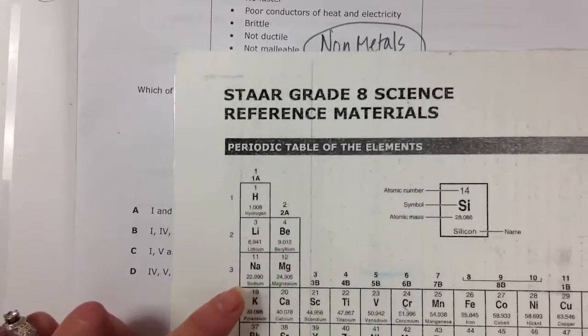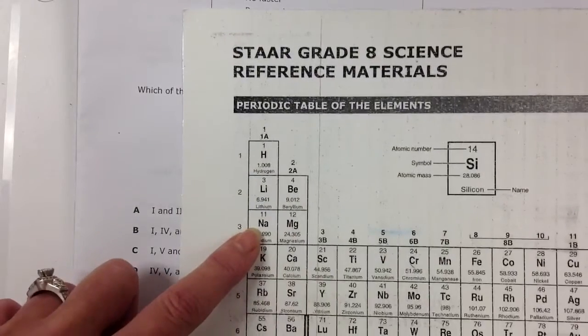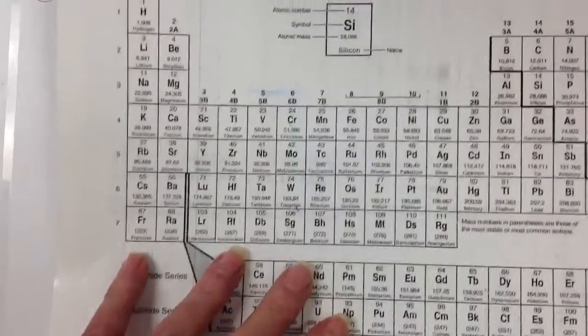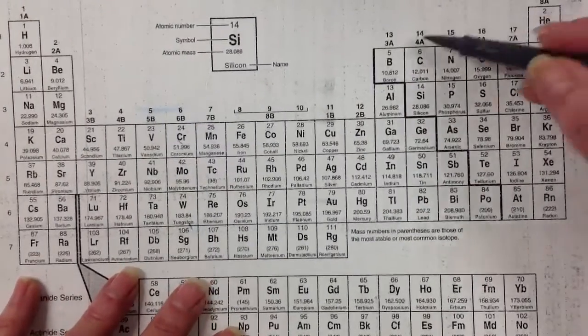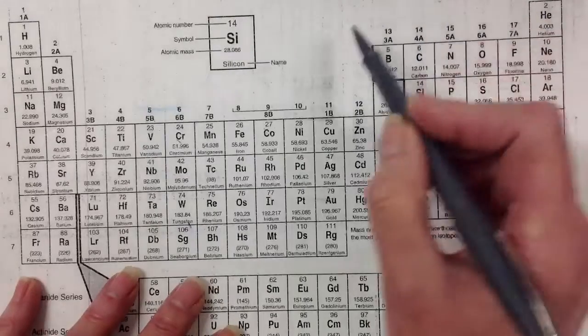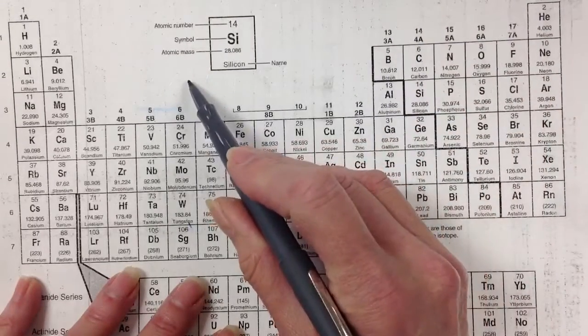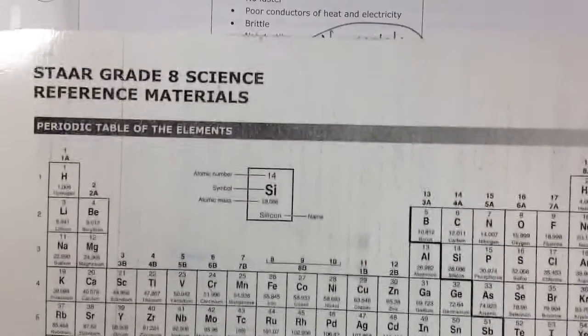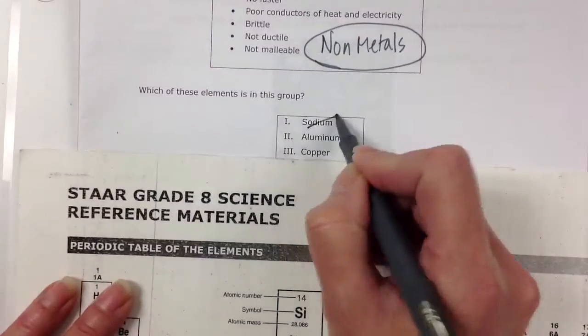So if we're looking for sodium, sodium's over here on this side, sodium is a metal. Remember, the periodic table divides here along the stair step. This side of the periodic table are all metals. This side are non-metals. So we can say sodium's not one.